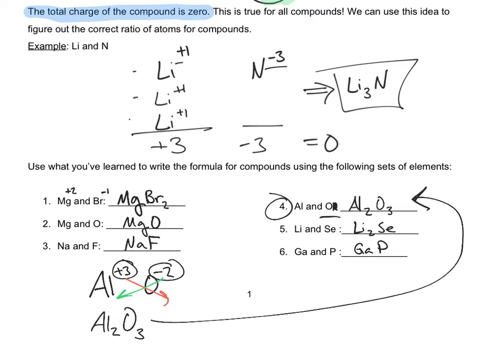So if the charges match — like with this one where magnesium is plus two and oxygen is negative two — those are already balanced, so you just write it down. But if they're different, you can use this crisscross method to write the compound down.